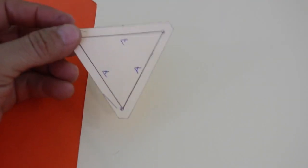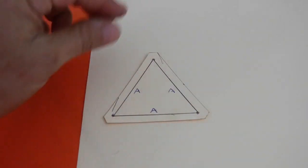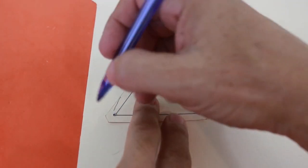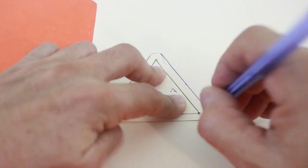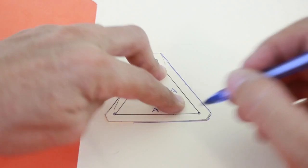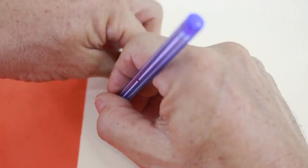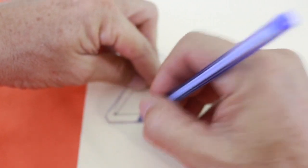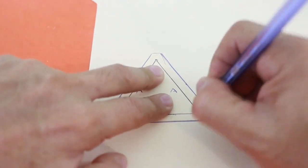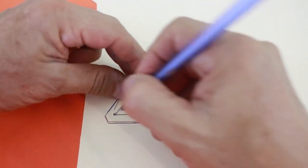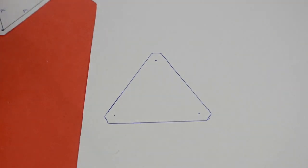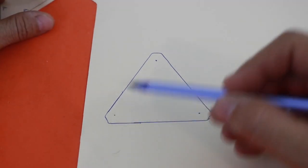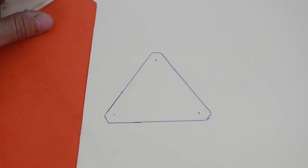Once you have your template you just put it over the cardboard and draw around the template, and also in the three holes. This is your form and now using a ruler you need to join the three points together.